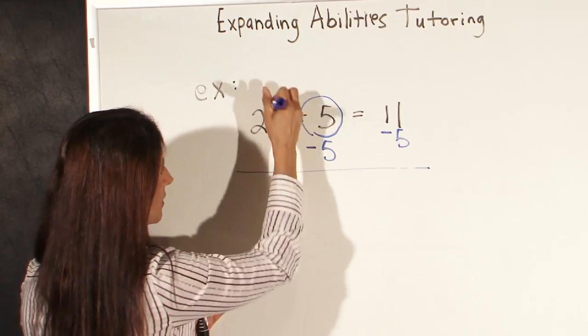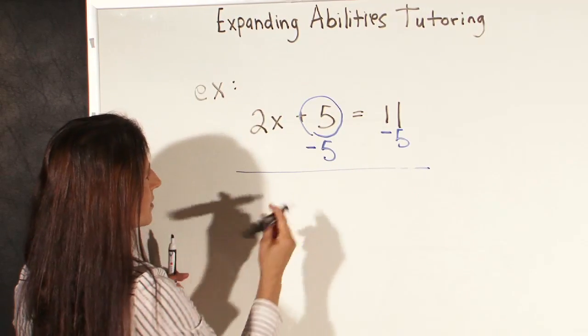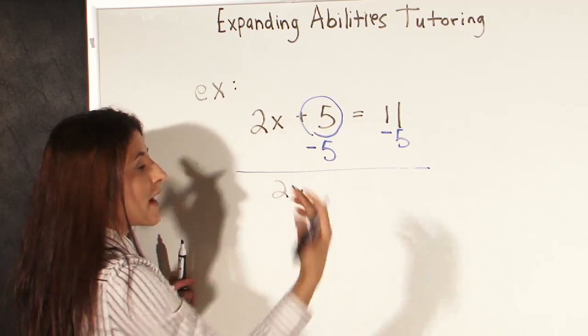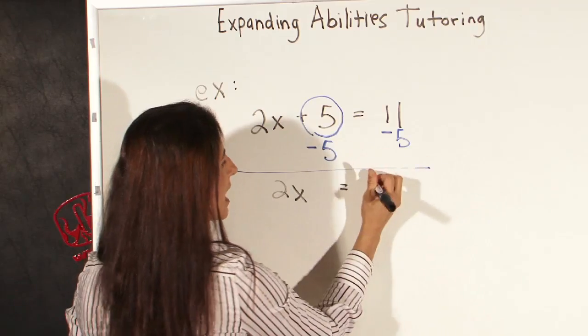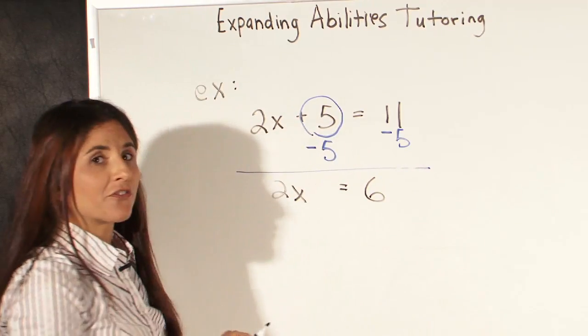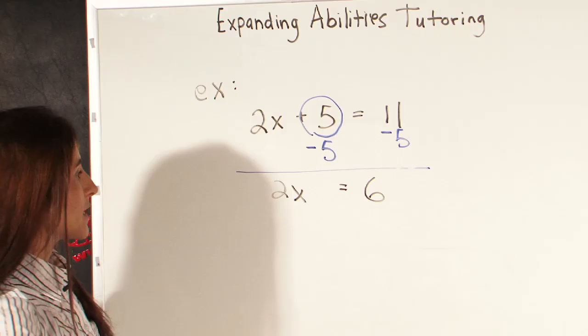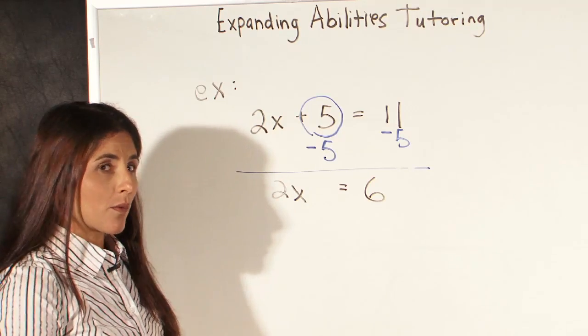So here we bring down our 2x, and 5 minus 5 is 0, so that goes away. And then 11 minus 5 is 6. So that's the first step when solving a simple algebraic equation like this.